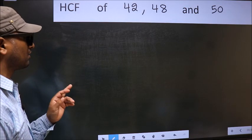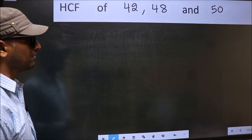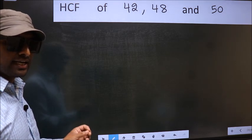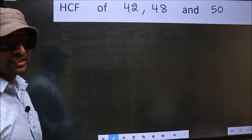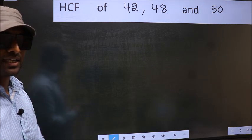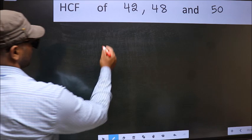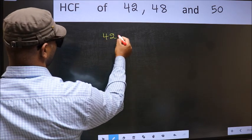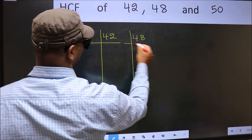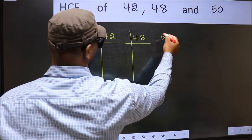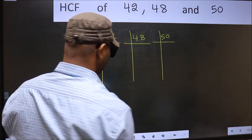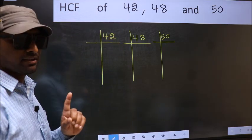HCF of 42, 48, and 50. To find the HCF, we should do the prime factorization of each number separately. What I mean is 42, 48, 50. This is your step 1.